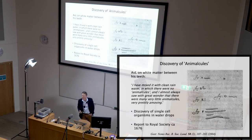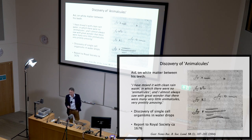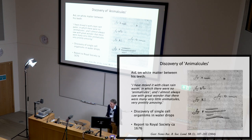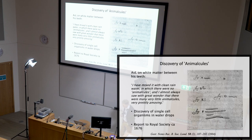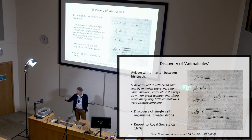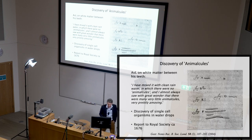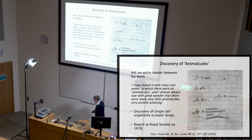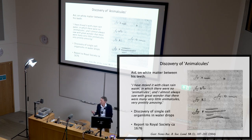Nobody believed him at the time. He wrote letters to the English Royal Society, and it took him a long time to convince people. First, they weren't ready — these things didn't exist in the world picture. Second, nobody could replicate these experiments because they didn't have access to his microscopes. So he actually made microscopes and passed them on to others. He published in lots of letters to the Royal Society and was finally accepted as a great scientist — certainly the first person to see living microorganisms and single-cell systems.